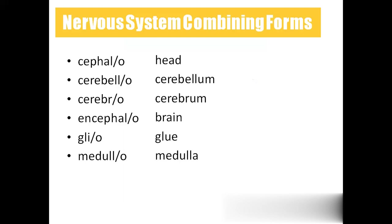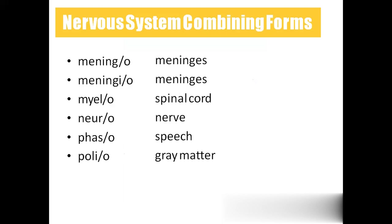Coming to combining forms: Cephalo means head. Cerebello means cerebellum. Cerebro means cerebrum. Encephalo means brain. Glio means glue — as in pasting or supporting. Medulo means medulla. Meningeo means meninges, which are the coverings of the brain and spinal cord. Myelo means spinal cord. Neuro means nerves. Phaso means speech. Polio means gray matter — for example, poliomyelitis: polio means gray matter, myelitis means inflammation of the spinal cord, so it is inflammation of the gray matter of the spinal cord.